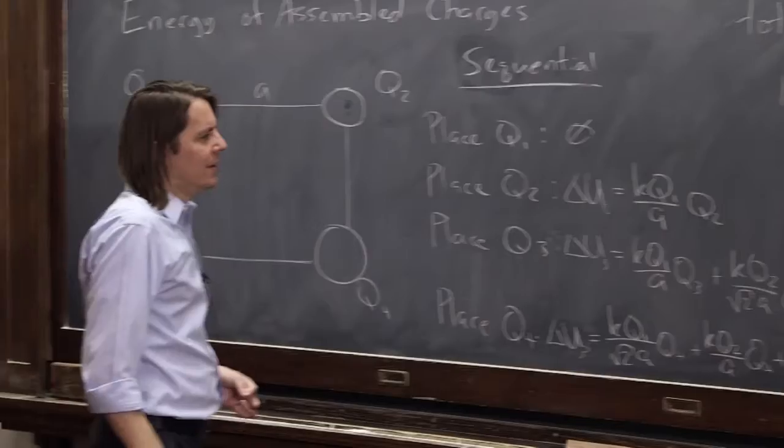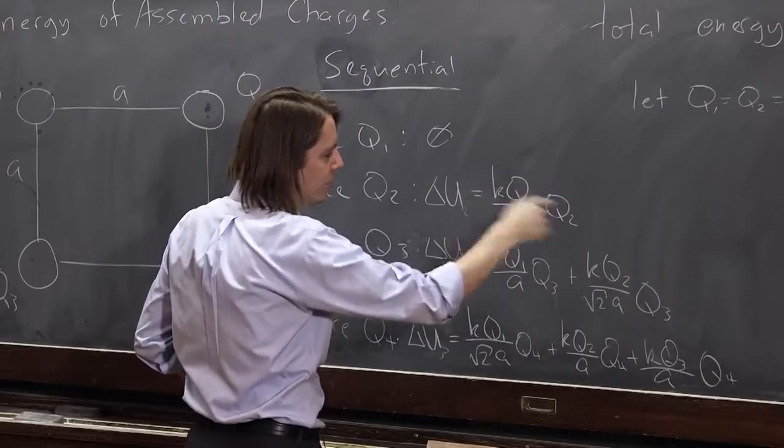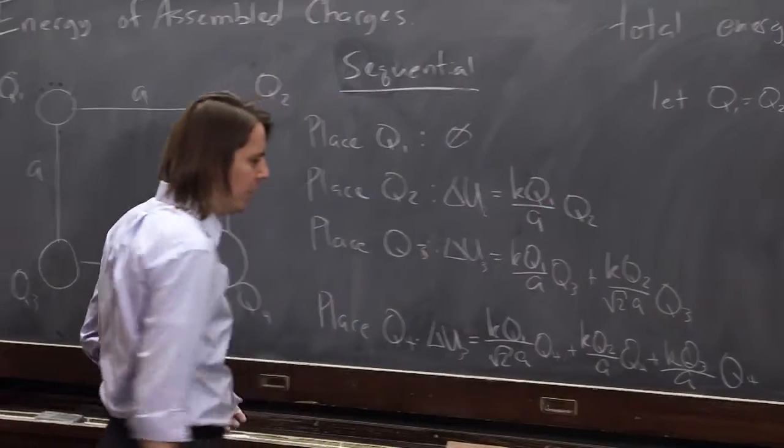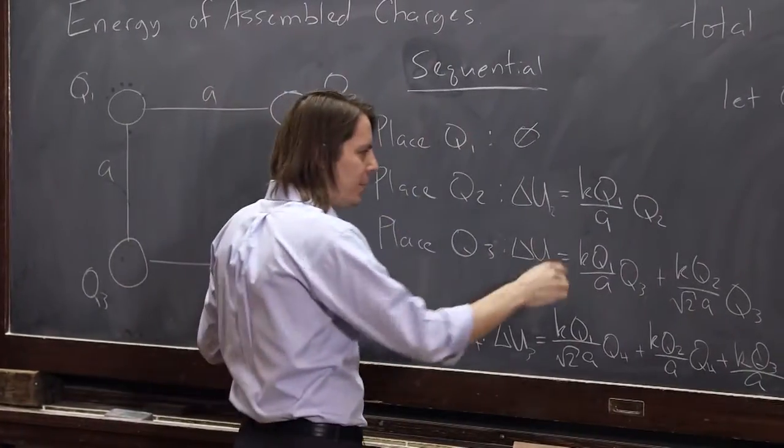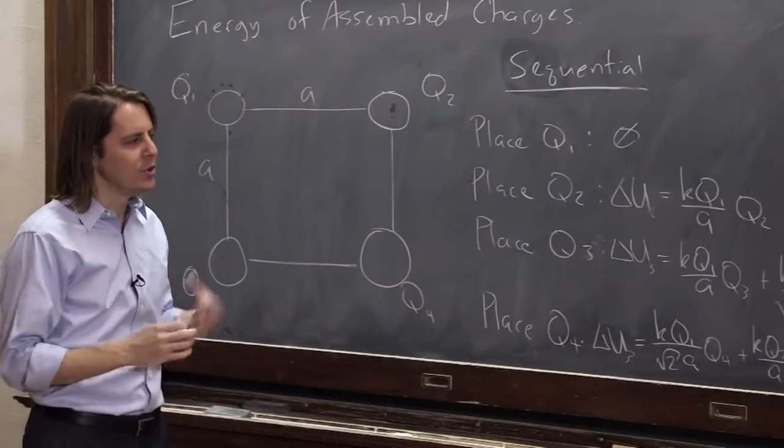And if we do that, then every one of these terms is going to be just Q squared. Q1 times Q2, they're both just Q. Q squared, Q squared, Q squared, everything's Q squared. Everything's got a K in it. And the only difference is whether there's an A in the bottom or a square root of 2 times A in the bottom. There's really only two kinds of terms.